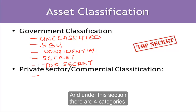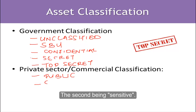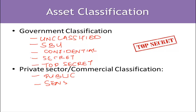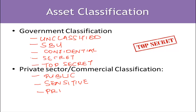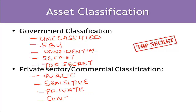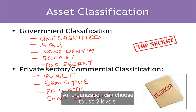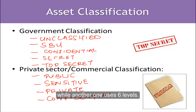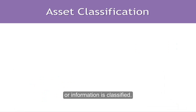The second category is sensitive, the third is private, and finally we have confidential. As I said, there is no standard for asset classification — an organization can choose to use two levels while another uses six levels. There are certain factors that determine how data or information is classified.